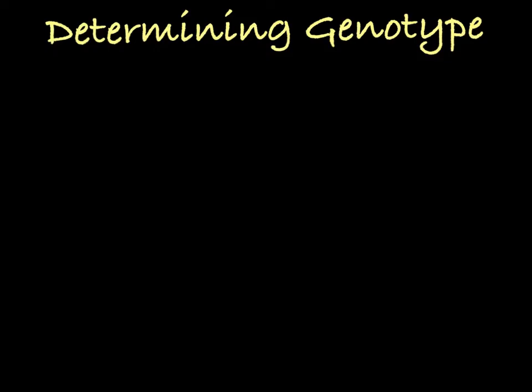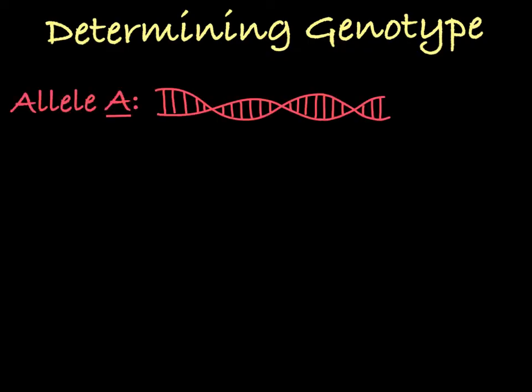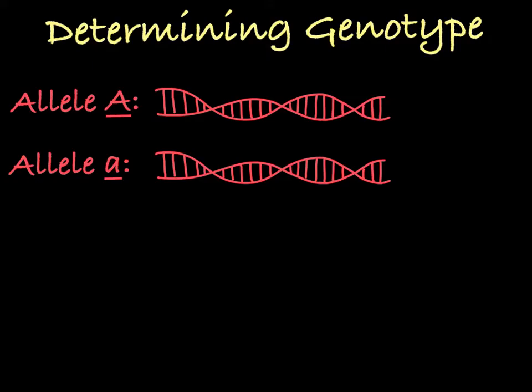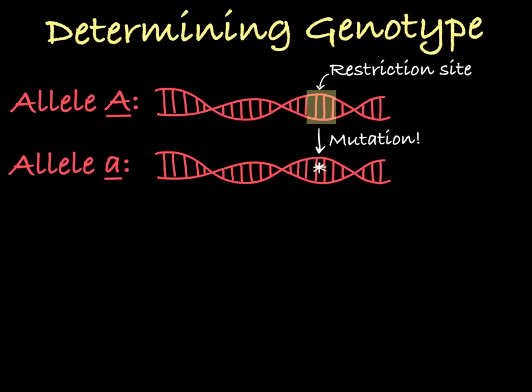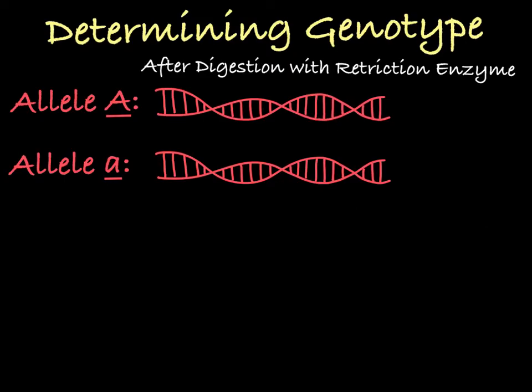So how can we use gel electrophoresis to tell us a person's genotype for a specific trait? Let's say you have two possible alleles for a gene: the big A allele and the little a allele. The big A allele happens to contain a restriction site that will allow it to be cleaved by a certain restriction enzyme, while the little a allele has a mutation in that restriction site, meaning it will not be recognized and cleaved by that same restriction enzyme.